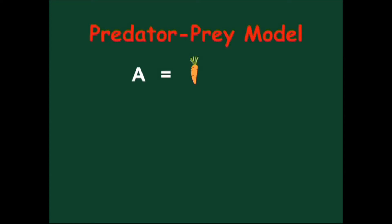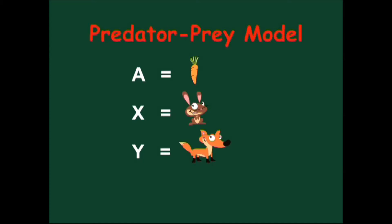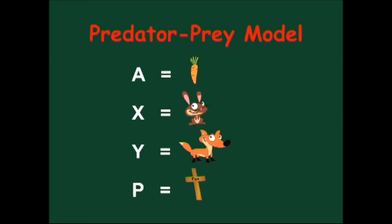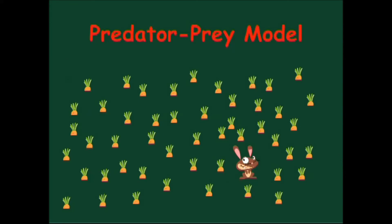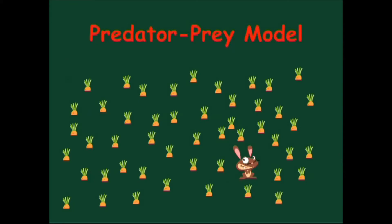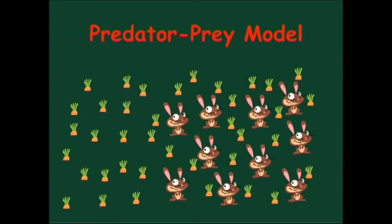A are carrots, X is a population of rabbits, Y a population of foxes, and P are the foxes that have died. At the beginning, there is a real abundance of carrots. The rabbits love to eat carrots, thrive, and become plentiful.